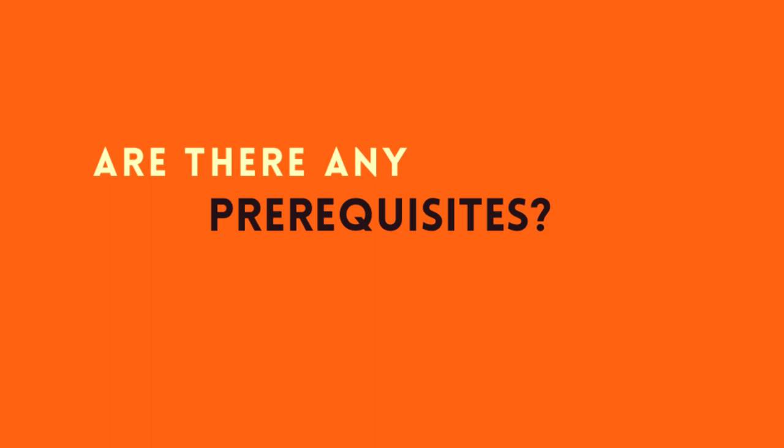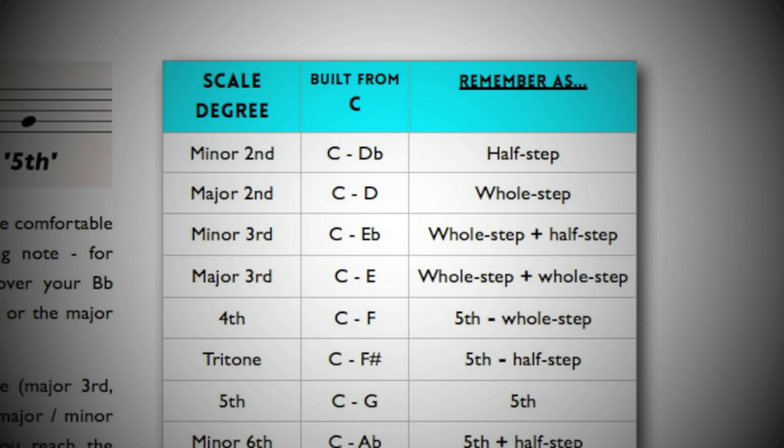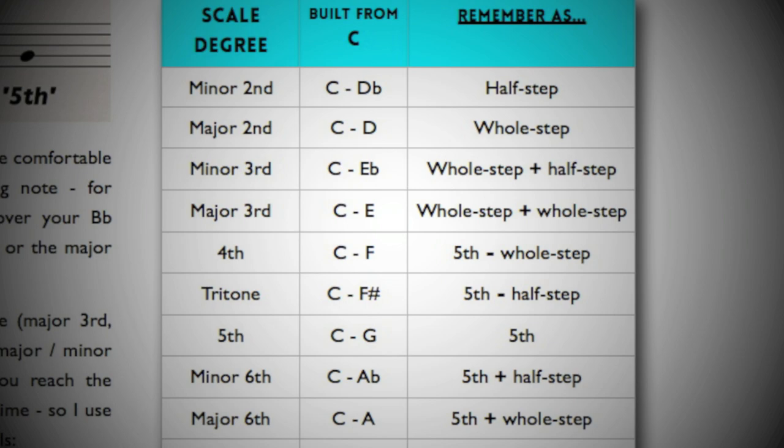There are some prerequisites for this book; however, I do cover these prerequisites before the book begins. I cover the essential parts of reading music, as well as scale degrees and intervals — you'll need to understand the difference between the major third and minor third, the whole step and half step, the fourth, the fifth, the tritone. All of these are essential knowledge for learning jazz, and I cover them before the book begins.